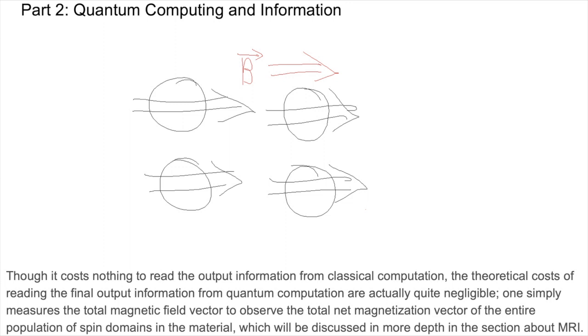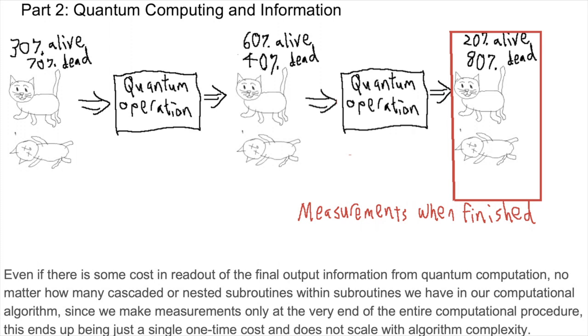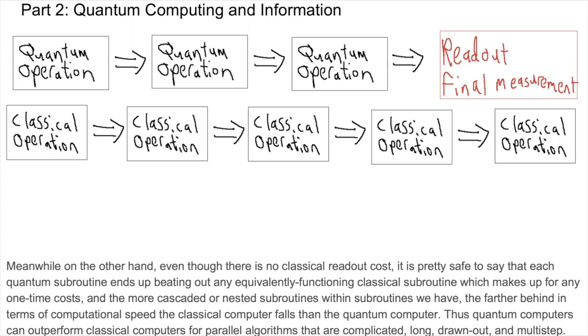Though it costs nothing to read the output information from classical computation, the theoretical costs of reading the final output information from quantum computation are actually quite negligible. One simply measures the total magnetic field vector to observe the total net magnetization vector of the entire population of spin domains in the material, which will be discussed in more depth in the section on the physics of MRI. Even if there is some cost in readout of the final output information from quantum computation, no matter how many cascaded or nested subroutines within subroutines we have in our computational algorithm, since we make measurements only at the very end of the entire computational procedure, this ends up being just a single, one-time cost and does not scale with algorithm complexity in how many subroutines we have. Meanwhile, on the other hand, even though there is no classical readout cost, it is pretty safe to say that each quantum subroutine ends up beating out any equivalently functioning classical subroutine, which makes up for any one-time costs, and the more cascaded or nested subroutines within subroutines we have, the farther behind in terms of computational speed the classical computer falls or lags behind than the quantum computer.